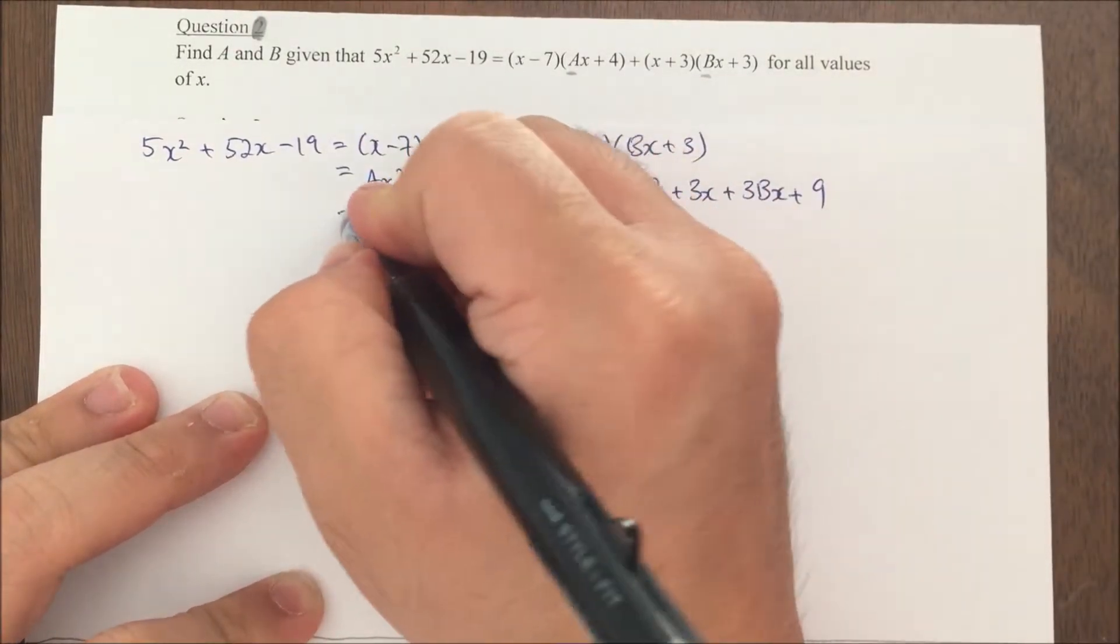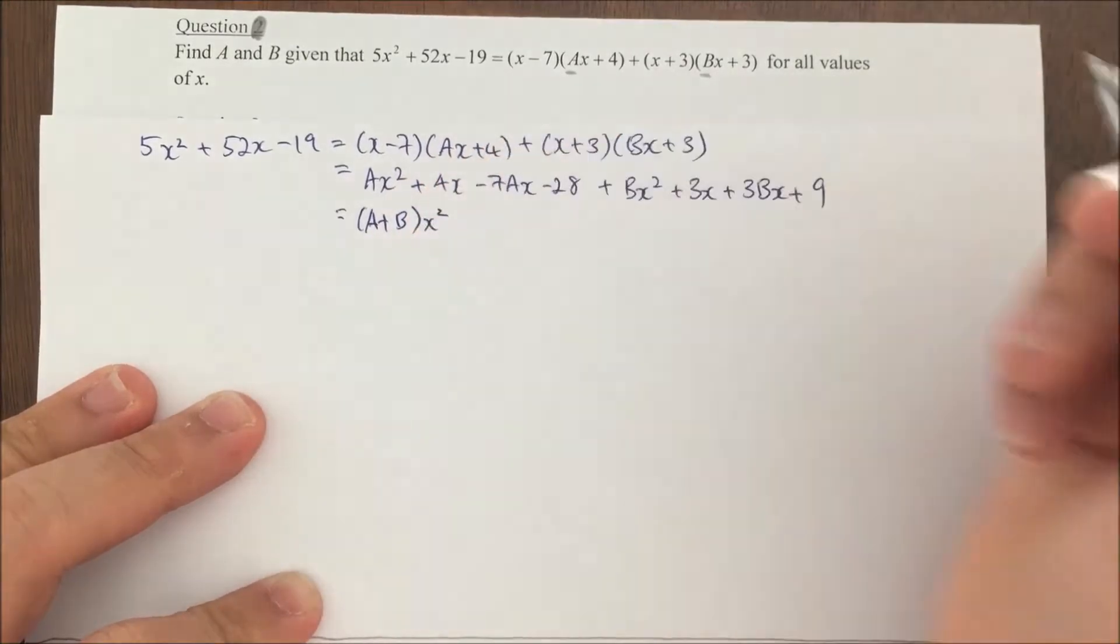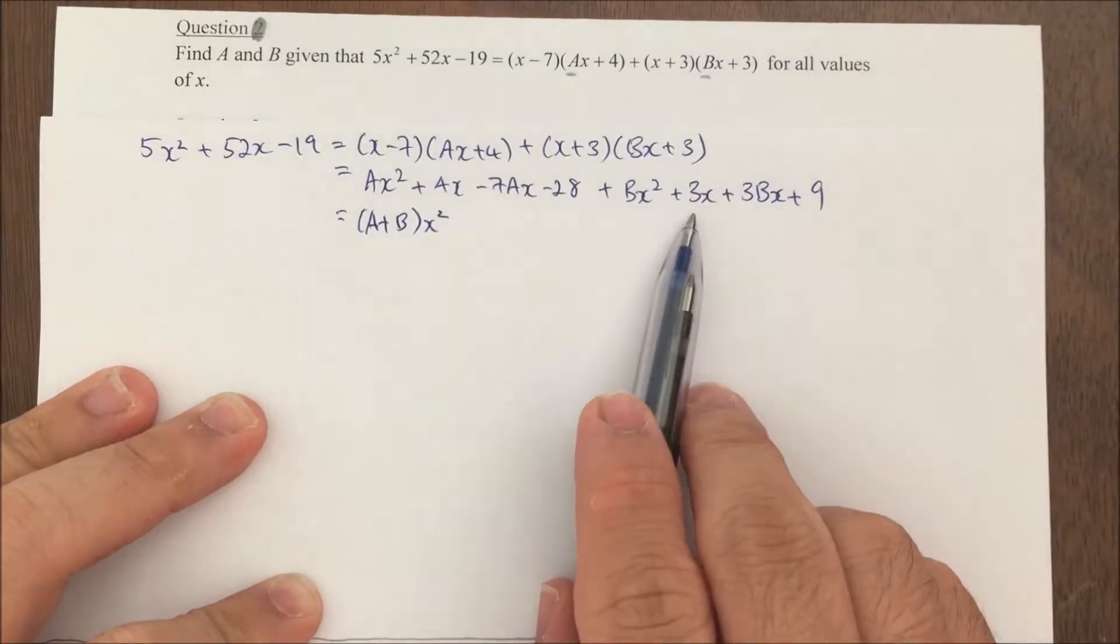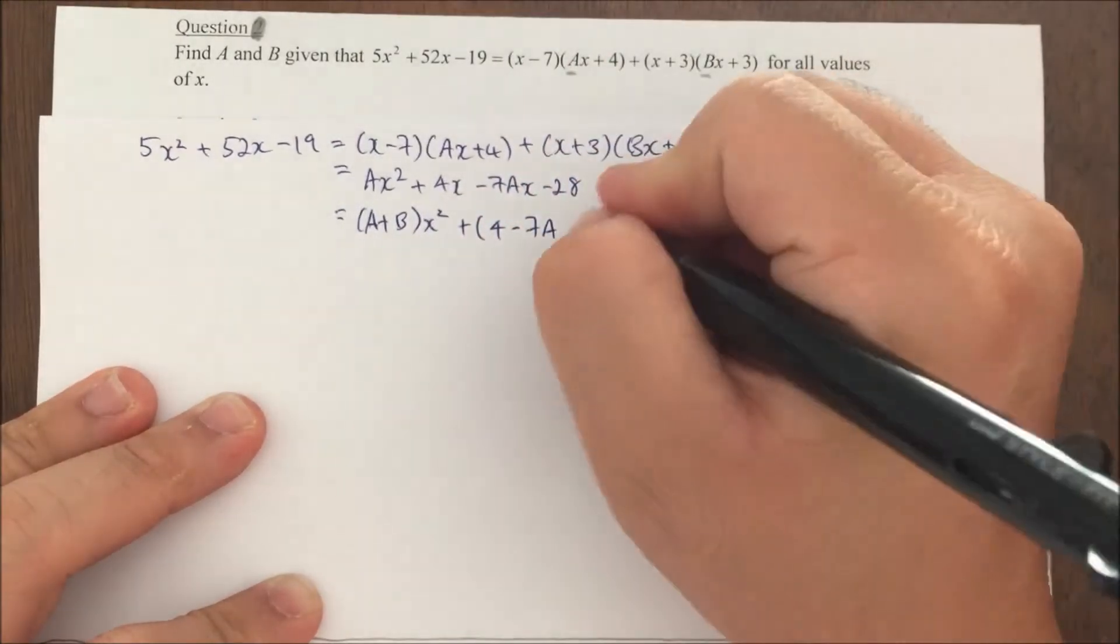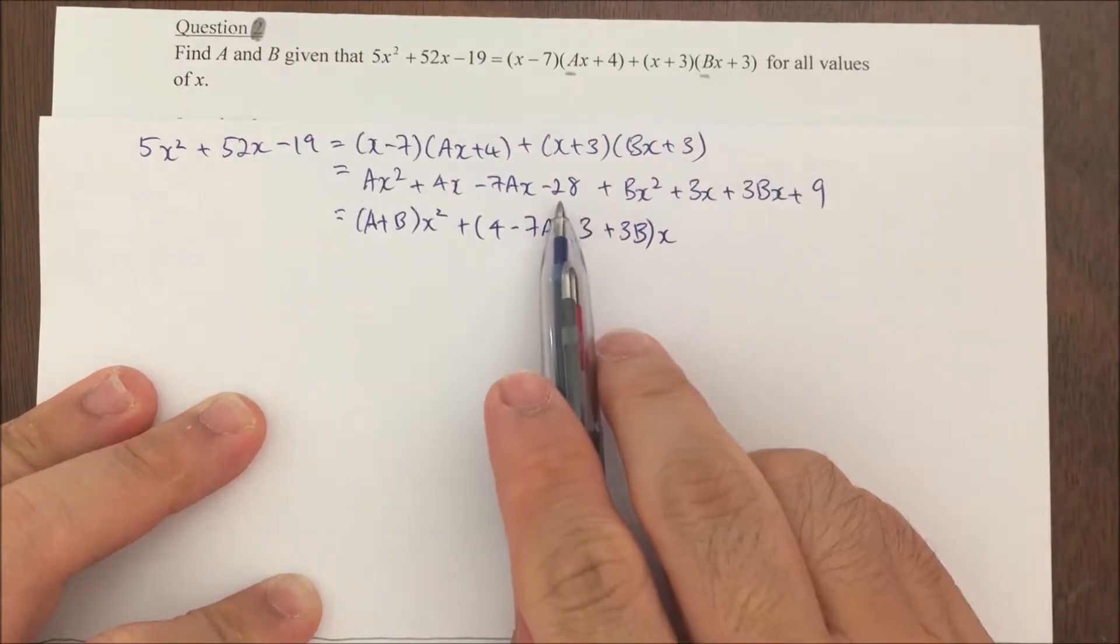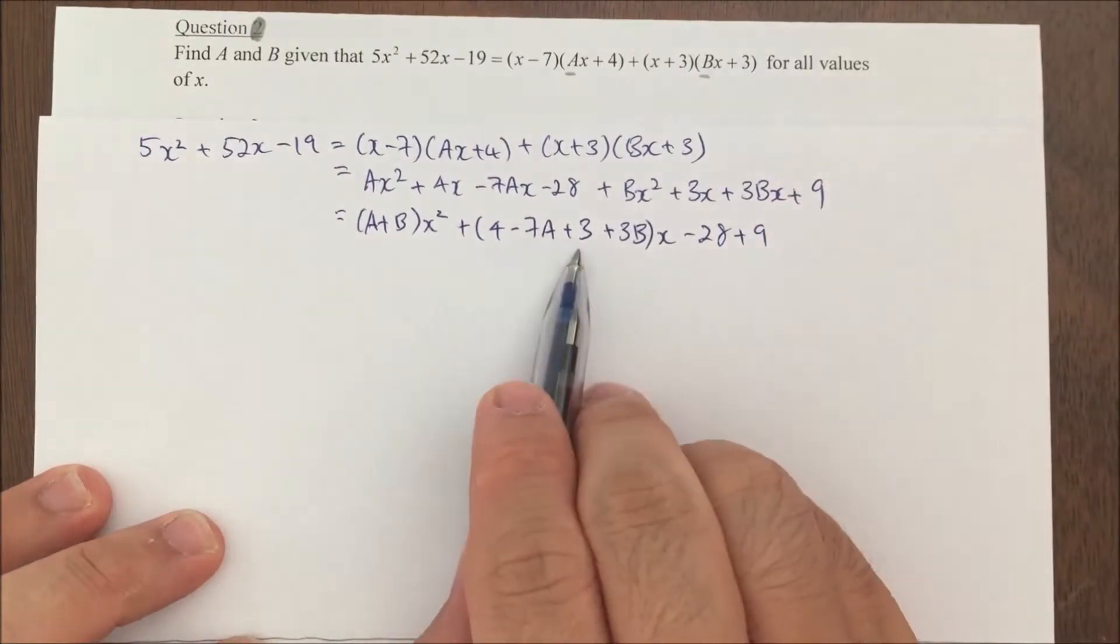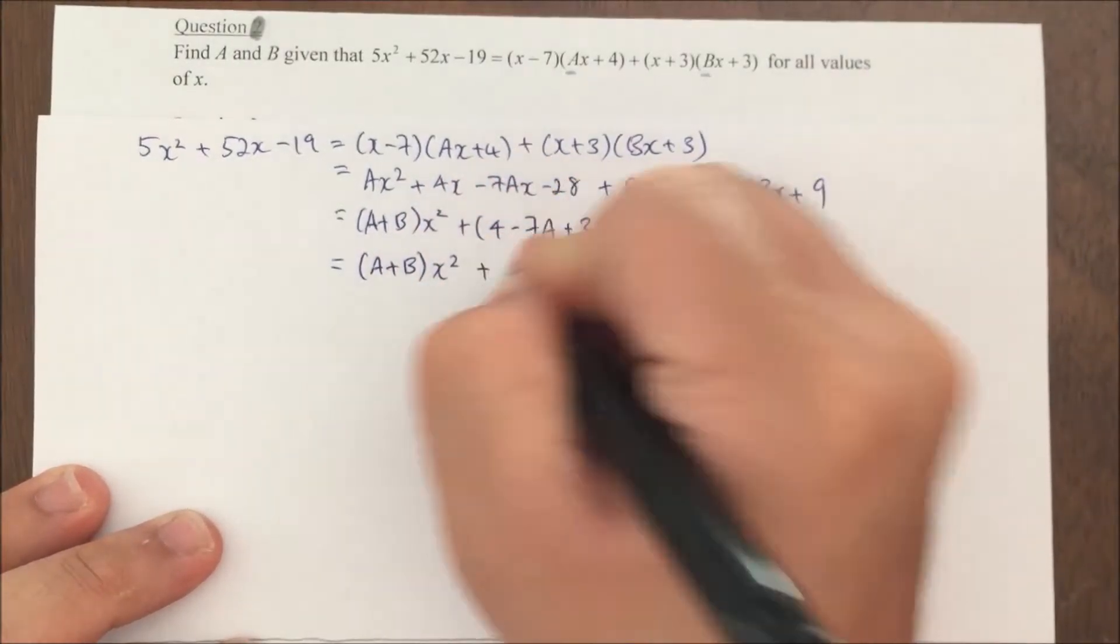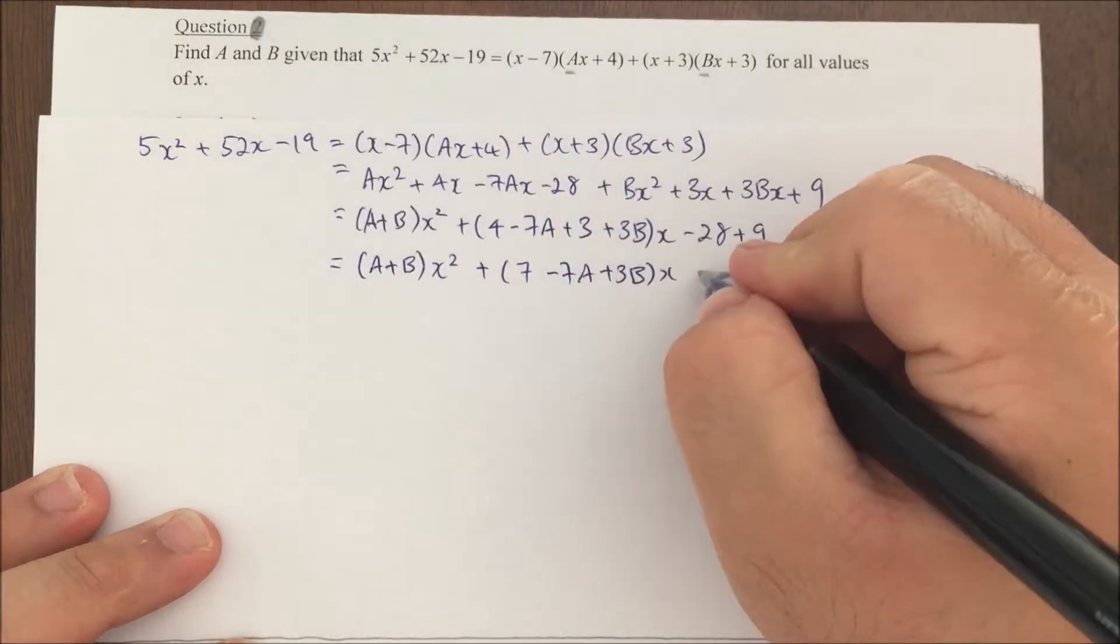Now I will group my terms together. I have x squared and x squared, so I group them up. I have (a plus b)x squared. For my x term, I have to be careful. I have 4x, negative 7ax, 3x, and positive 3bx. When I group them up, I will have (4 minus 7a plus 3 plus 3b)x. Now I have my constant term, negative 28 and 9, so I put them together. I can see that my 4 and 3, I can still simplify them. So I have (a plus b)x squared plus (7 minus 7a plus 3b)x minus 19.